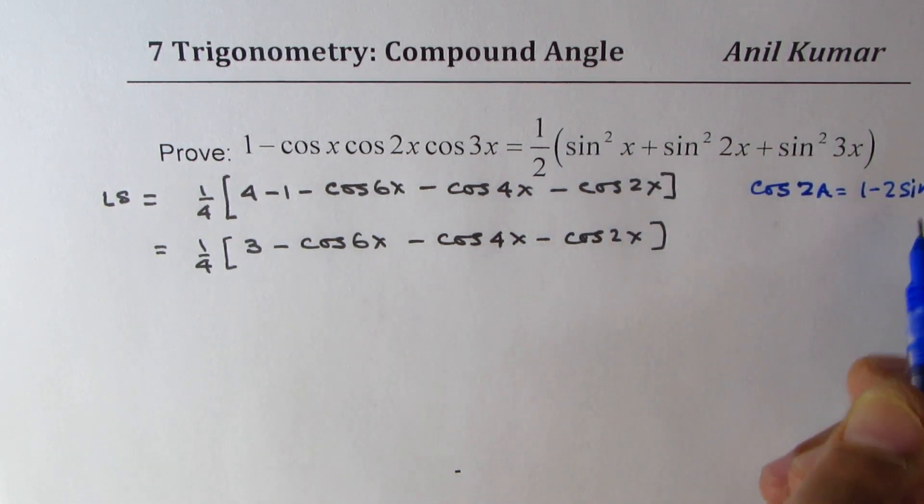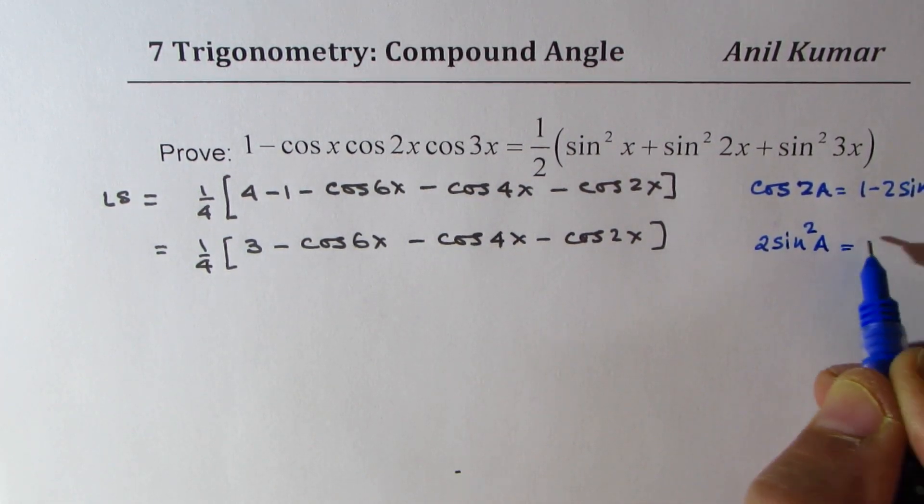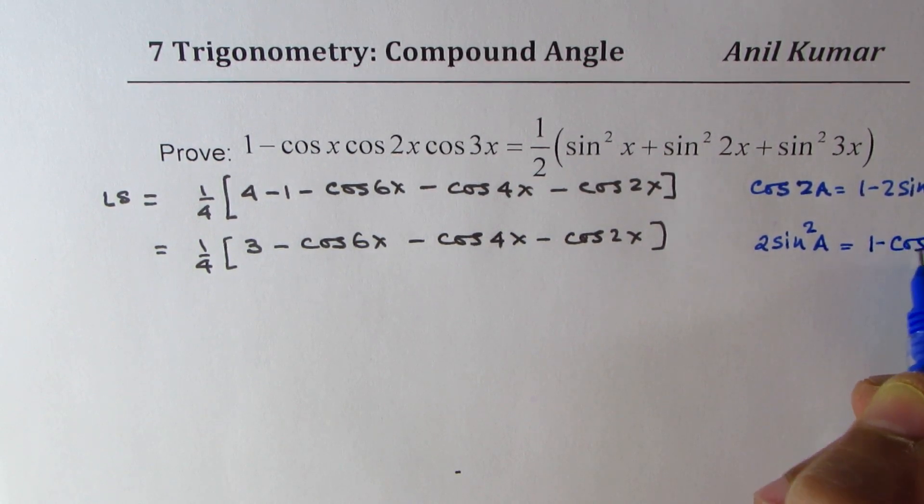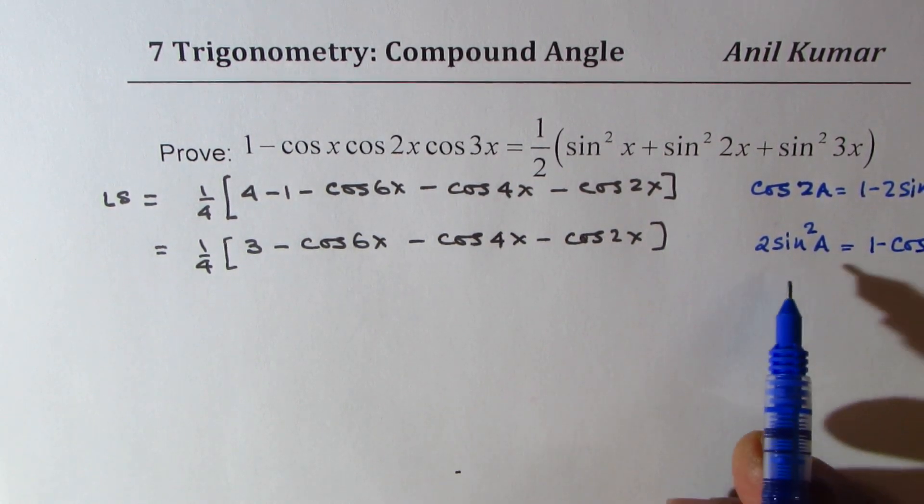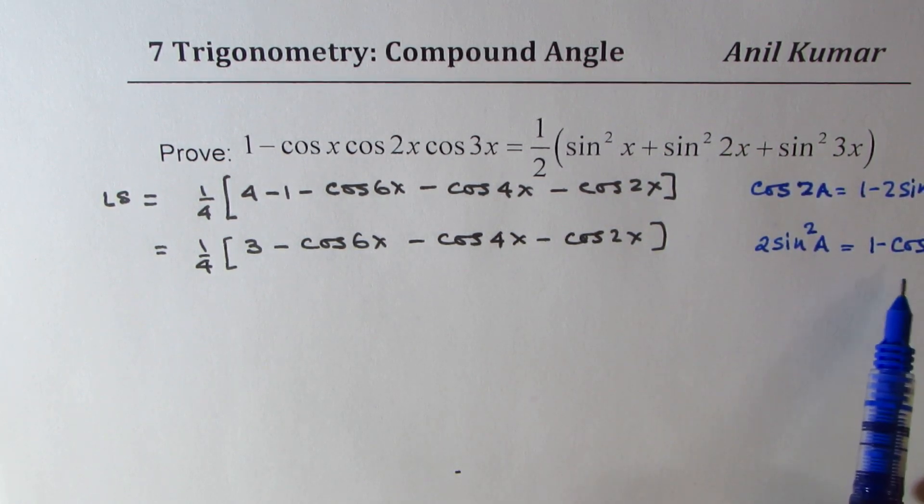So, we can write 2 sine square a as equal to 1 minus cos 2a. So, that is how sine square a is related with the double angle. So, in our case, we have cos 6x, which could be treated as 1 minus. So, we'll distribute this 3 over these 3 cos functions.